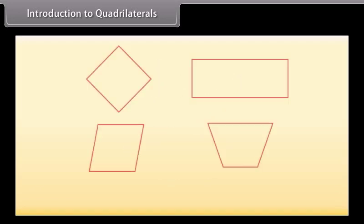Look at these shapes. These are all quadrilaterals because they have four sides, four angles, and four vertices.